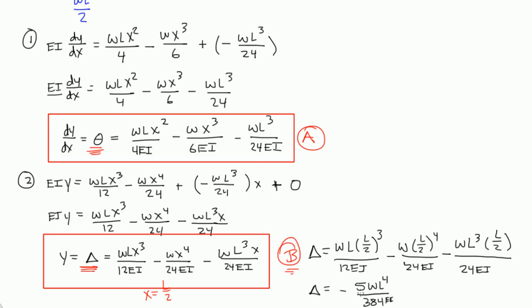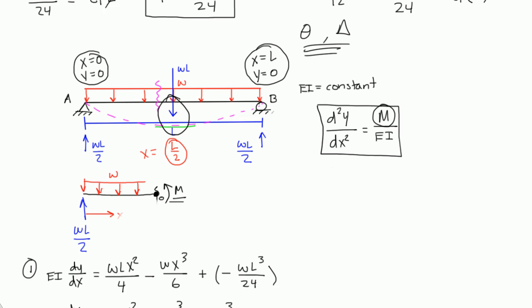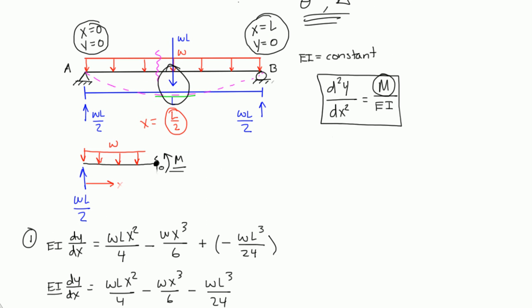So this is our deflection at midspan. So if we actually had the values of W and L, we could figure out what the deflection at midspan is. Now, if we wanted to find our slope, our rotation at A, this slope here at A,